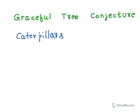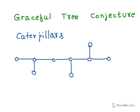In this type of graph, you have one long path and every other vertex is joined to this path by a single edge. For example, this is a caterpillar graph and this is not a caterpillar graph.